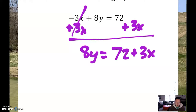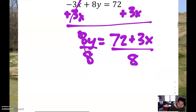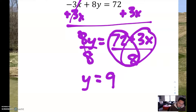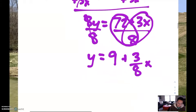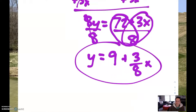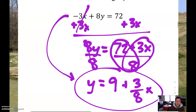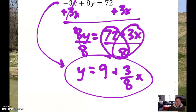Now we've almost got y by itself, but there's still that 8 bothering it. So let's go ahead and get rid of that 8 by dividing both sides by 8. The 8's go away and we're left with y equals. Each of these two components is going to get divided by 8. 72 divided by 8 is 9. That 3 over 8 can't be reduced, so it's just going to be plus 3/8 x. That is the final equation in slope-intercept form. Now we can say it has a slope of 3/8 and a y-intercept of 9 — it's a lot easier to identify those pieces once it's in slope-intercept form.